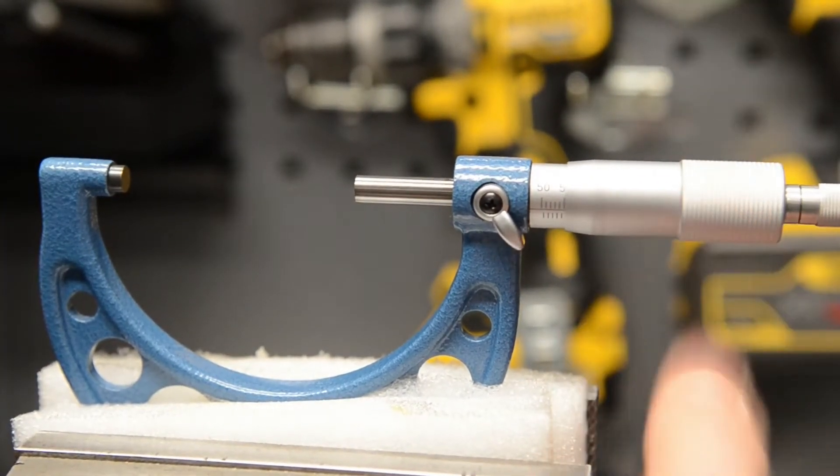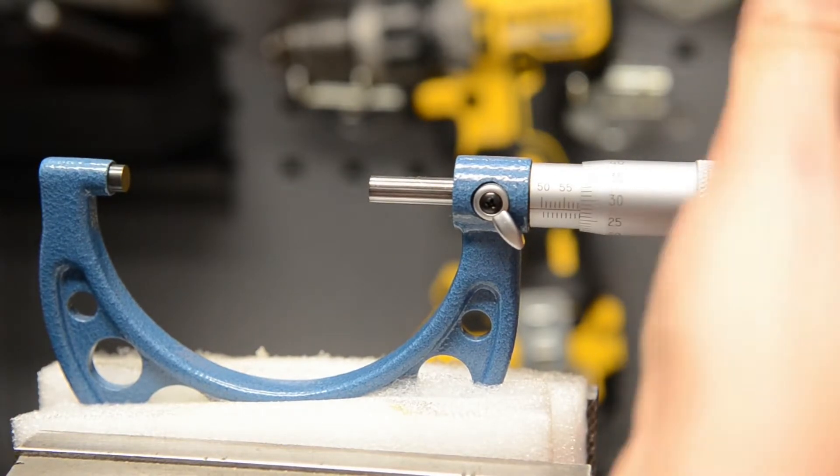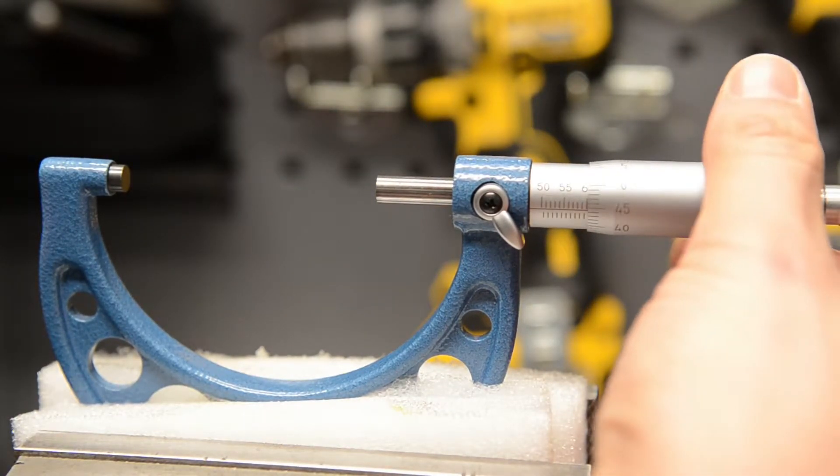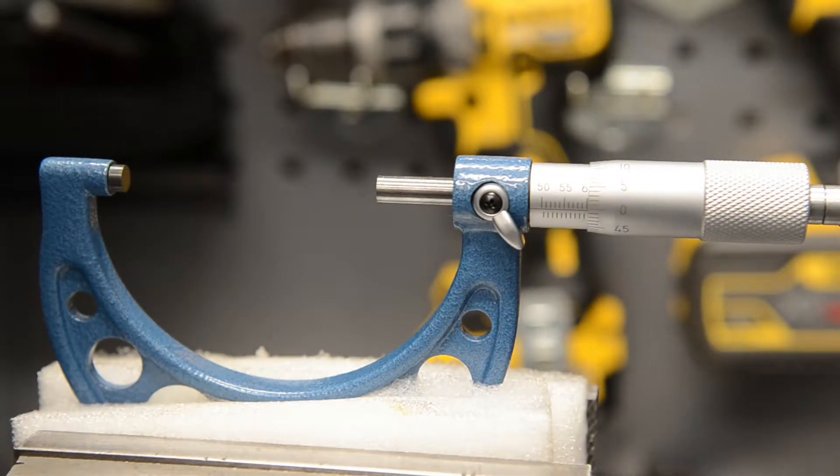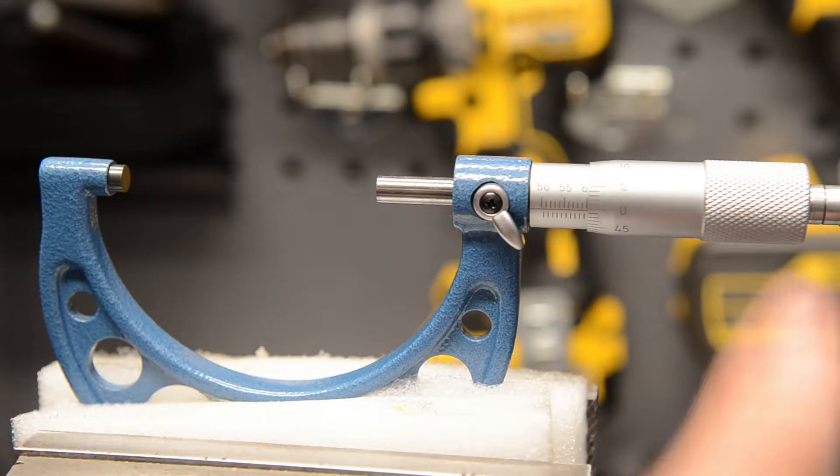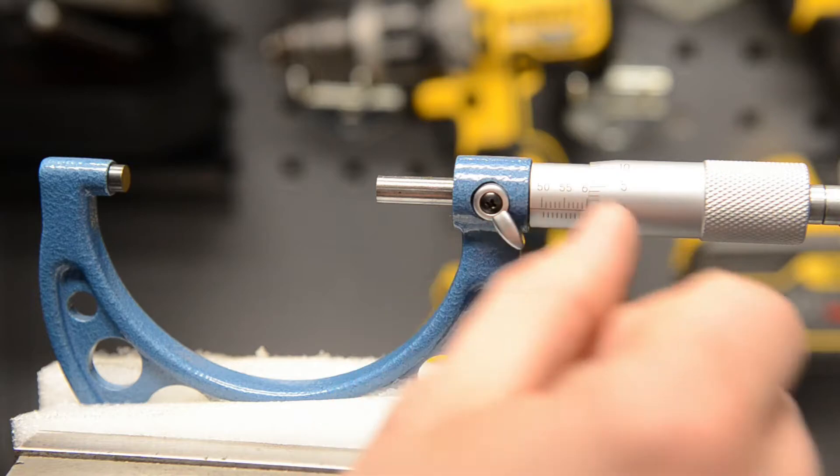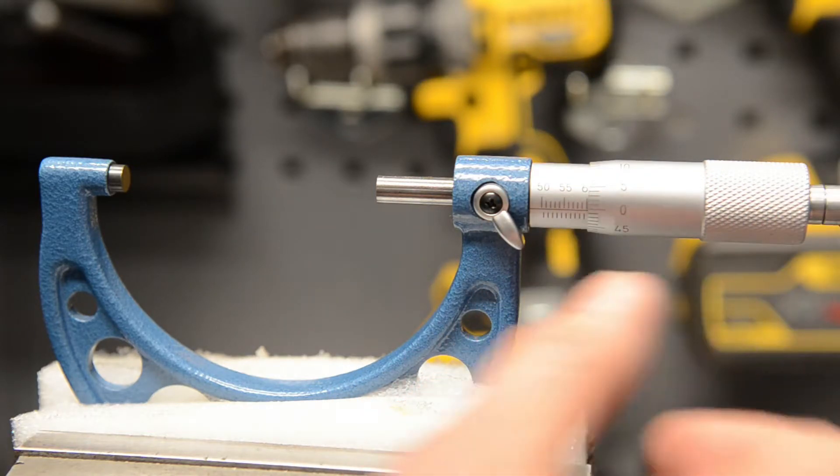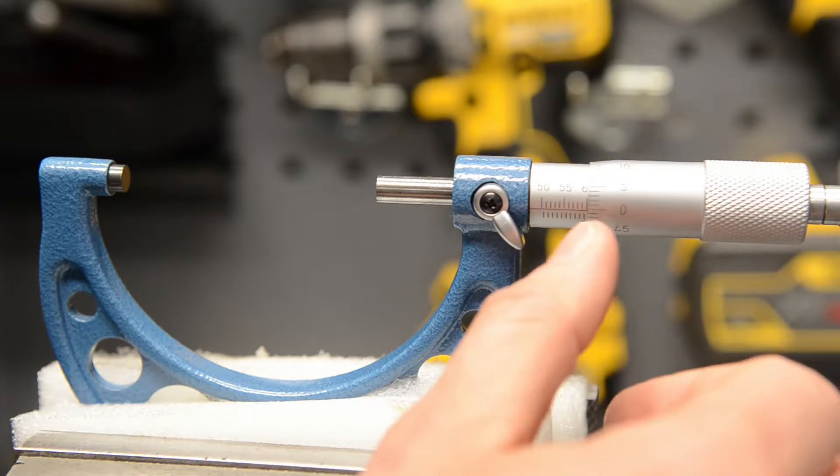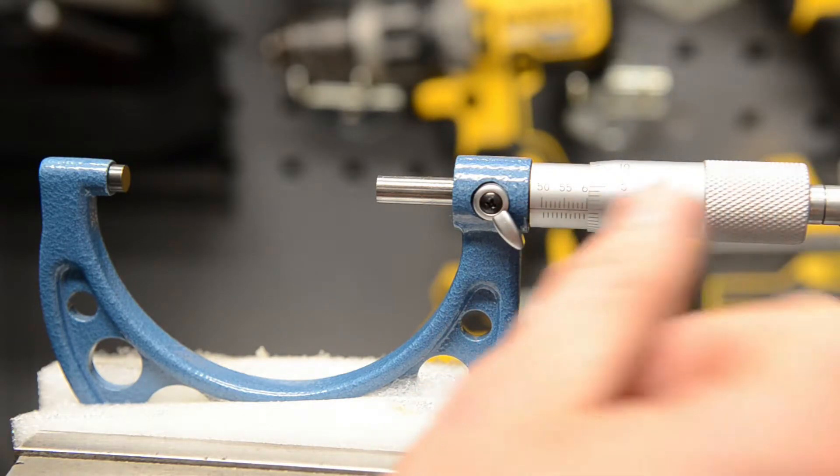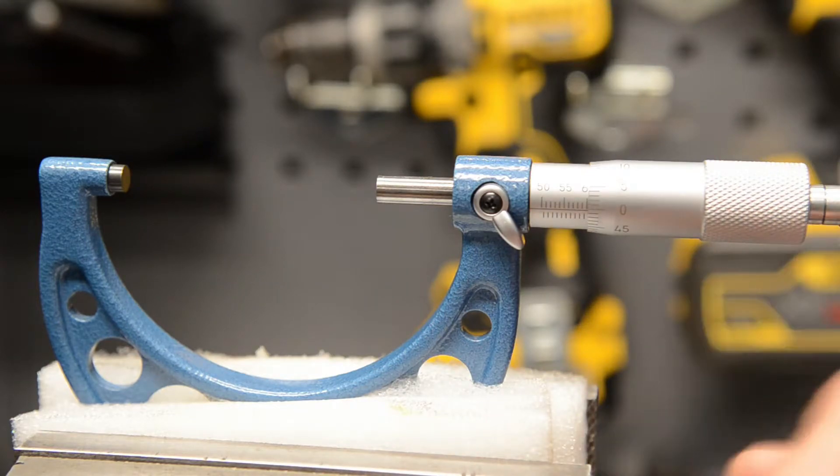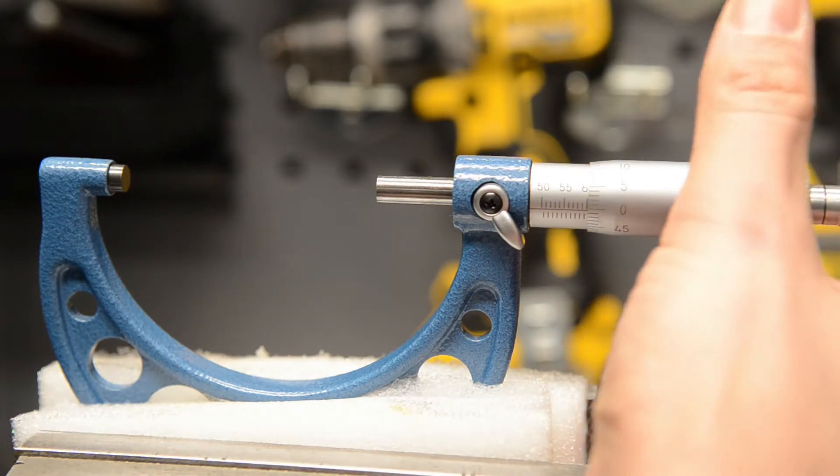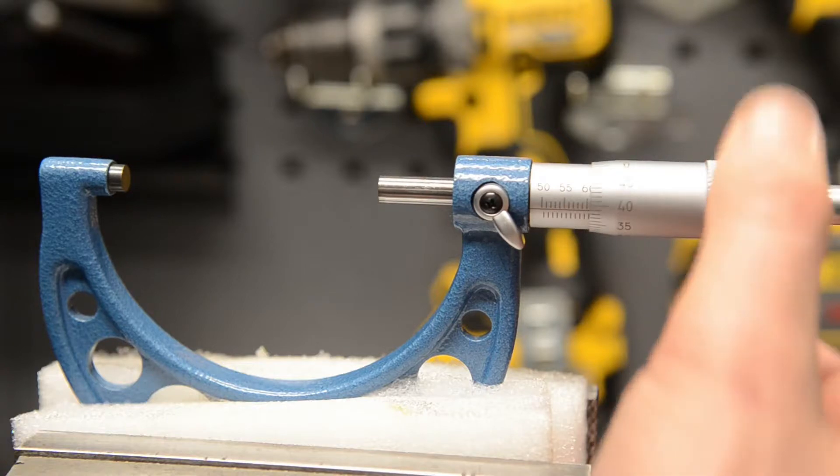Okay, so that's zeroed out, so I can make my measurement now. I'll spin that out to 60. The top line is one millimeter, the bottom line is half a millimeter, and this scale is from zero to 50. Each time you do a full revolution, it brings you half a millimeter.